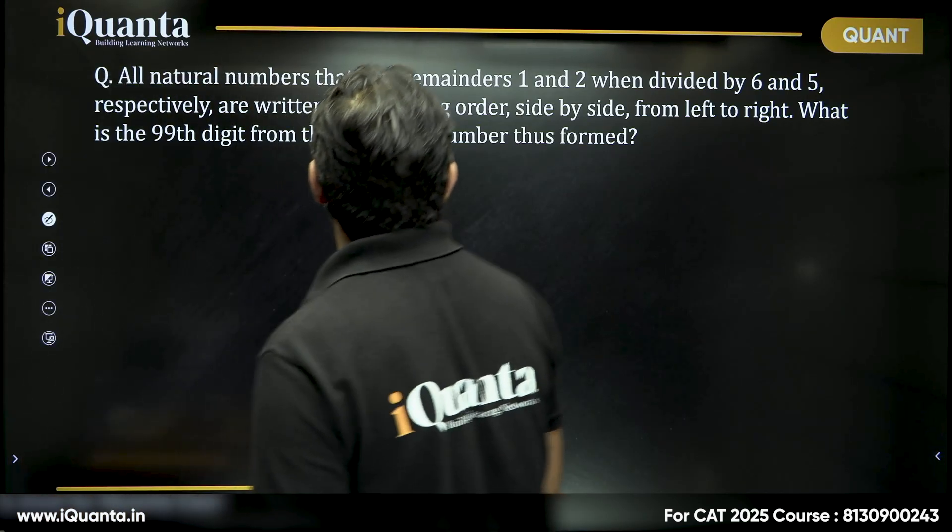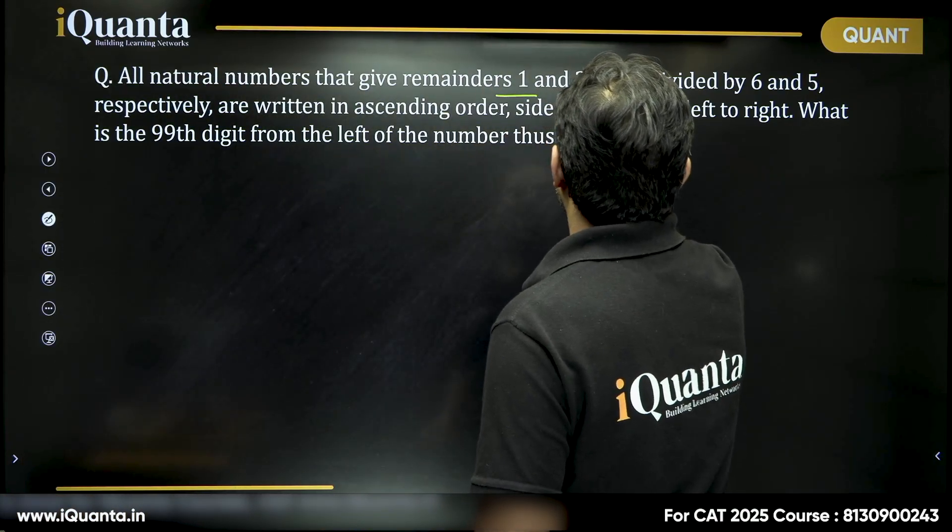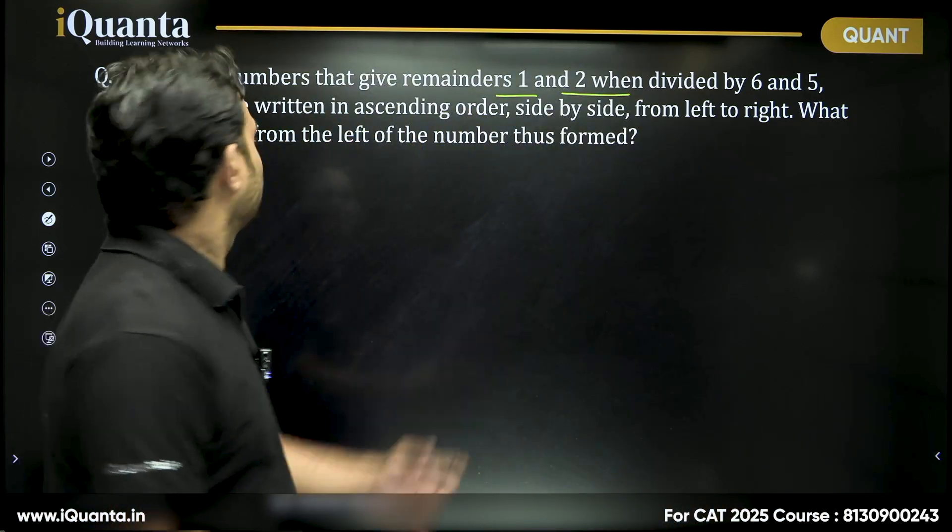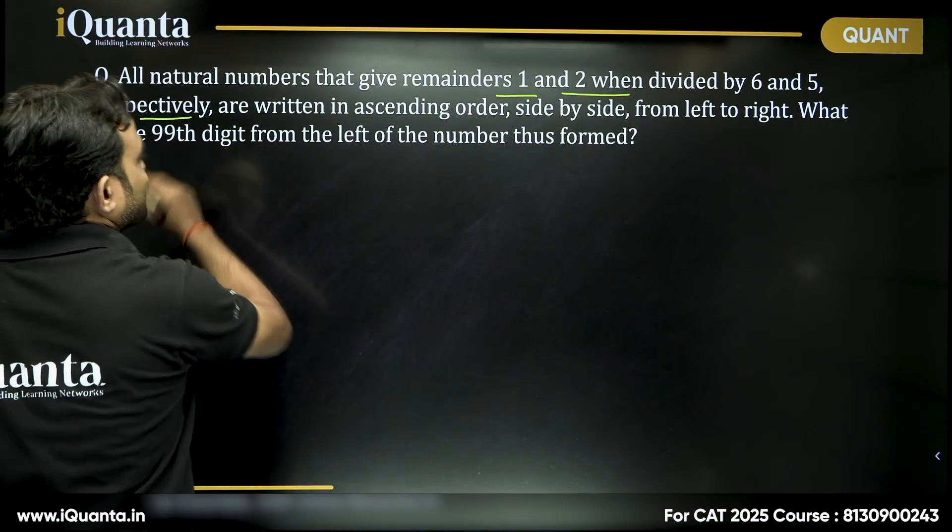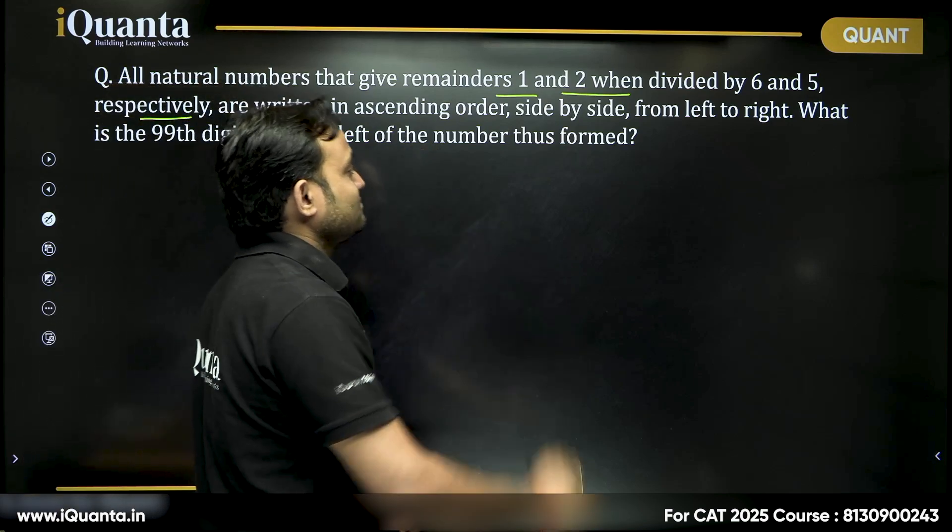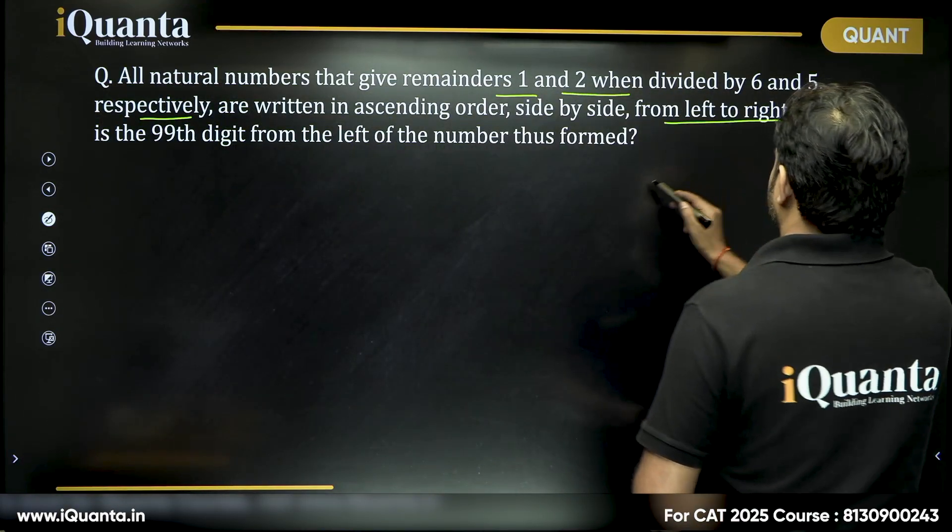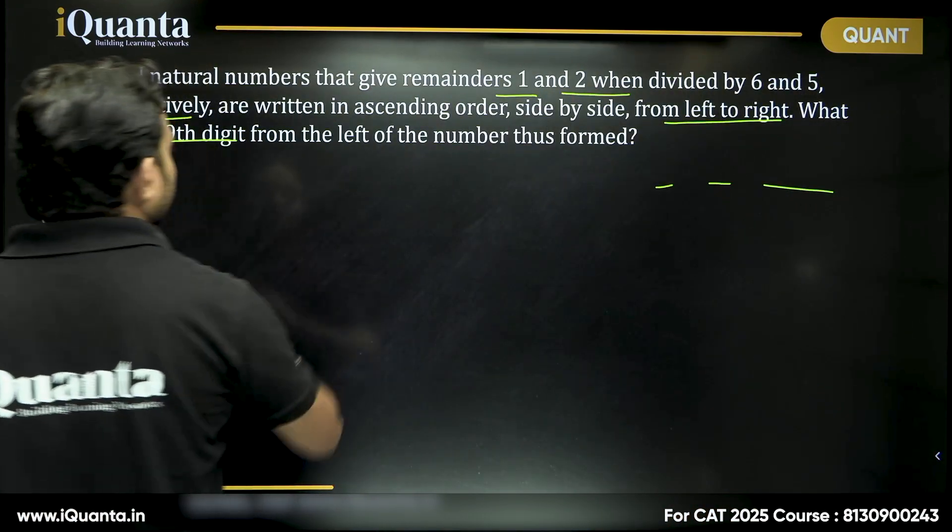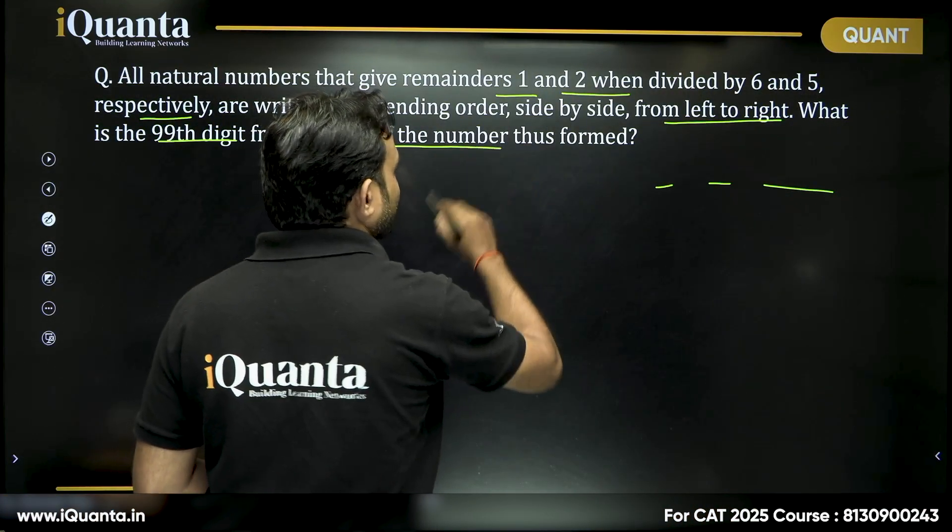All natural numbers that give remainders 1 and 2 when divided by 6 and 5 respectively are written in ascending order side by side from left to right. What is the 99th digit from the left of the number thus formed?